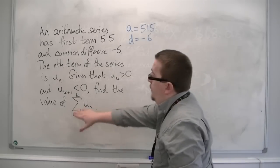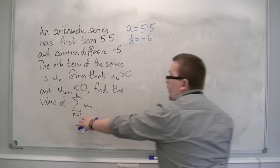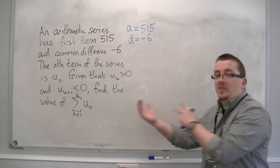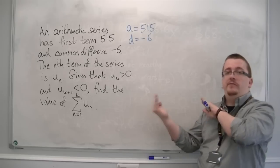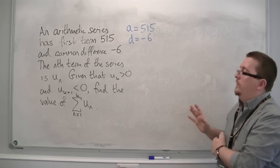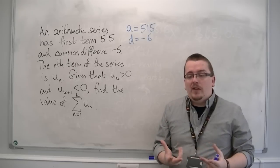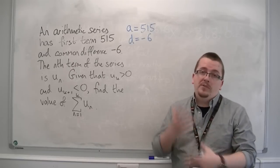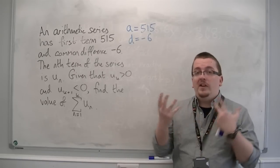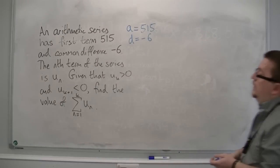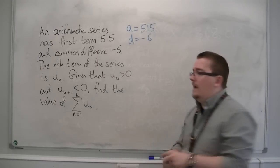We're then asked to find the value of all the terms from n=1 up to k, so we just want to add up all the positive terms and not include any of the negative ones. So I need to find out which term suddenly becomes negative. Which is the last positive term that I'm looking for? So let's write down what we have.